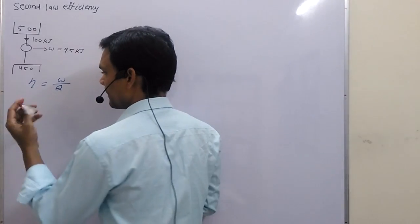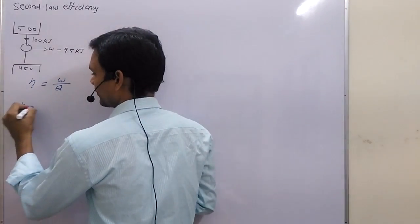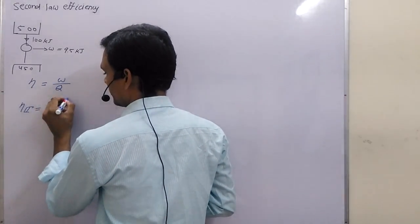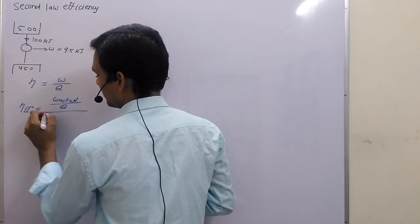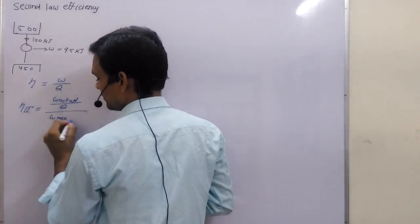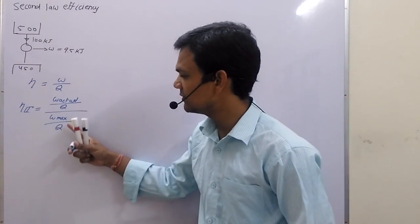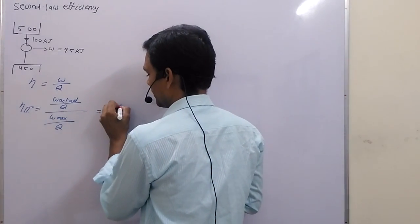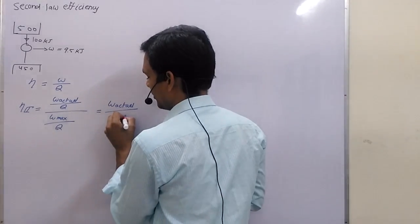The formula for secondary efficiency will be in terms of efficiency: W actual upon heat supply, divided by W maximum upon heat supply. Because in both cases we are supplying the same Q amount of energy, the final formula for secondary efficiency simplifies to W actual upon W maximum.